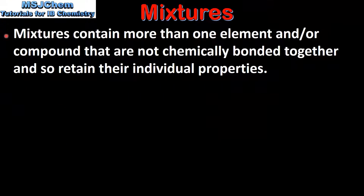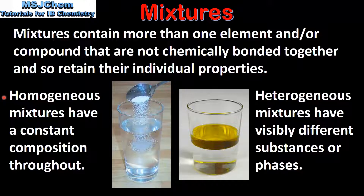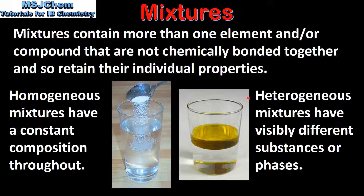And finally we look at mixtures. Mixtures contain more than one element and/or compound that are not chemically bonded together and so retain their individual properties. Mixtures can be homogeneous or heterogeneous. Homogeneous mixtures have a constant composition throughout — an example is salt water. Heterogeneous mixtures have visibly different substances or phases — an example is a mixture of oil and water.